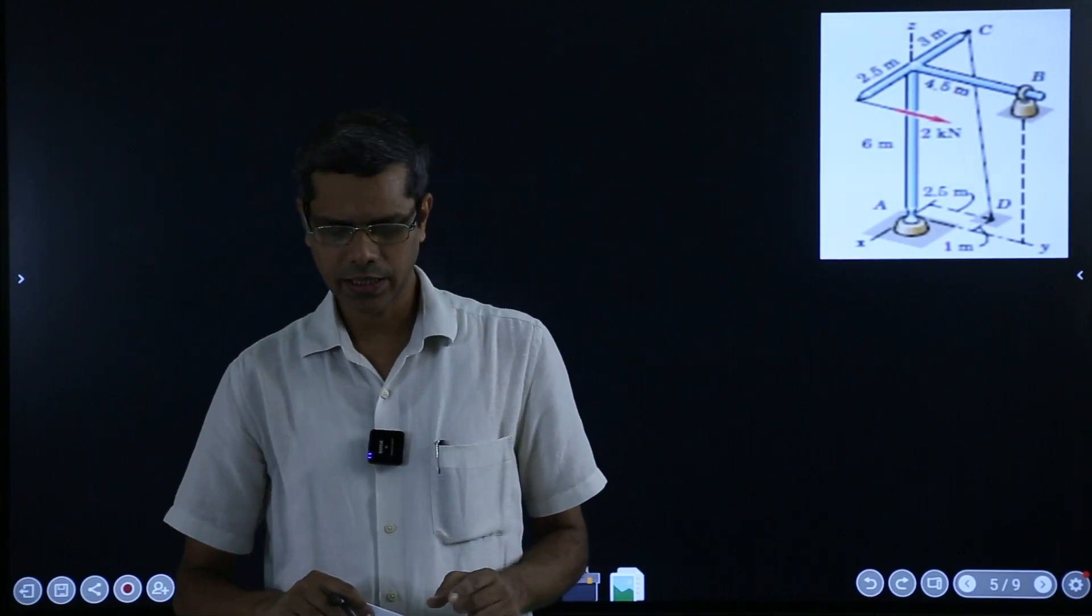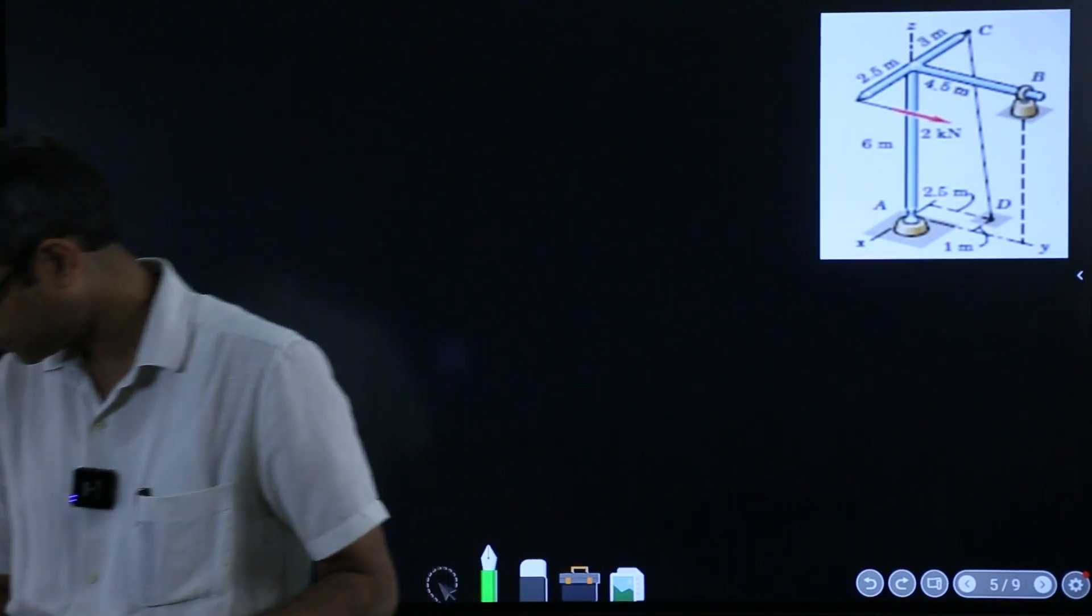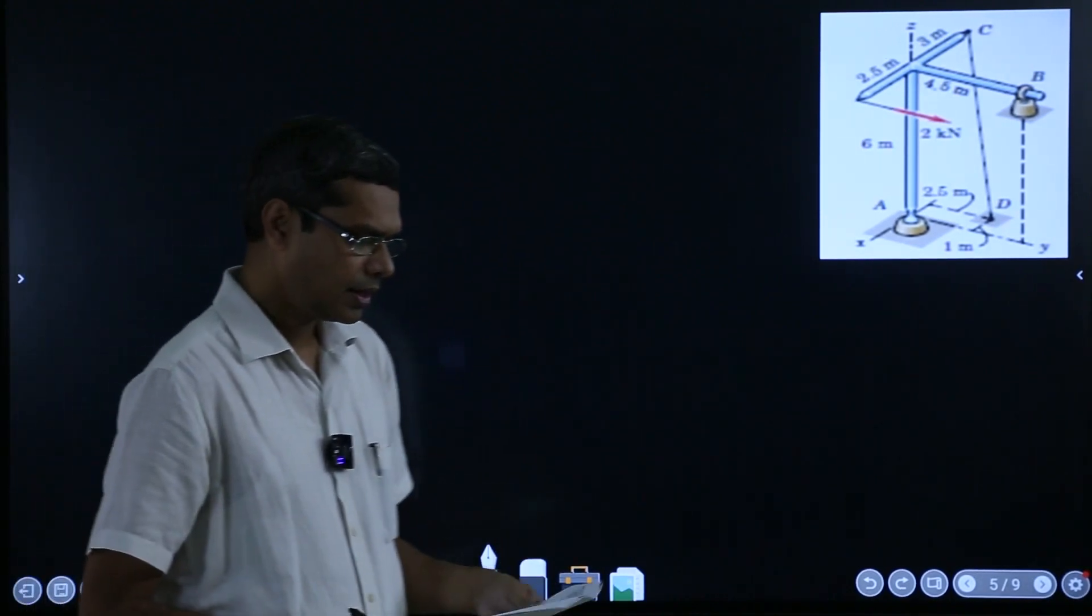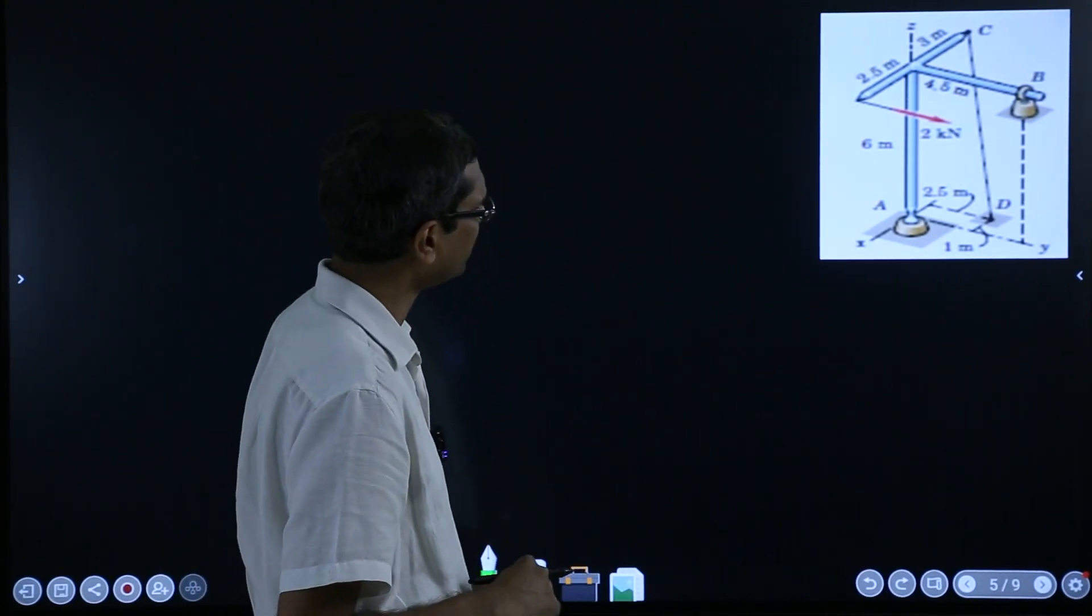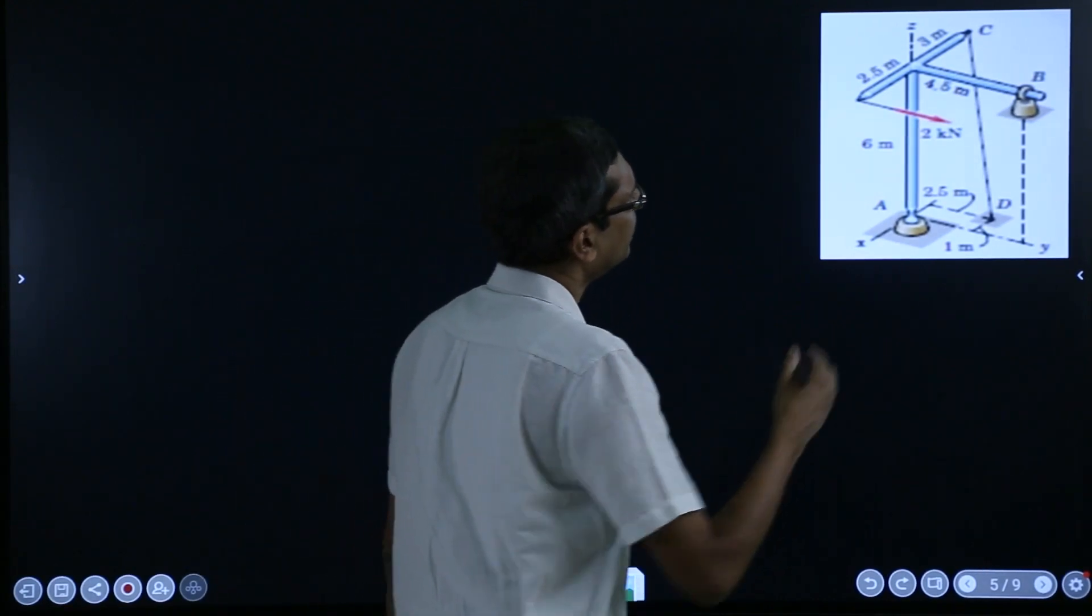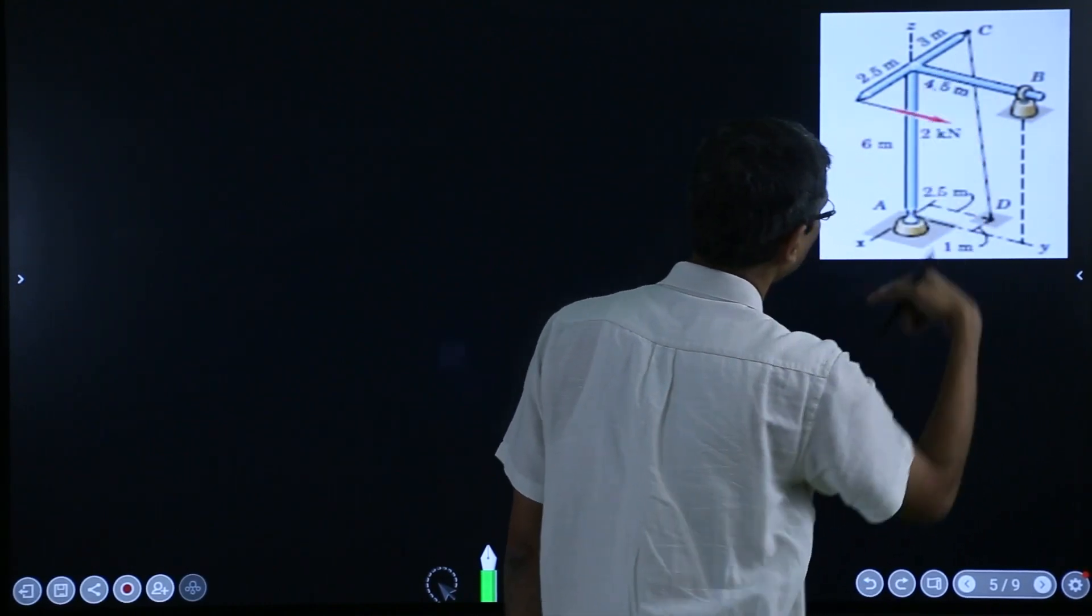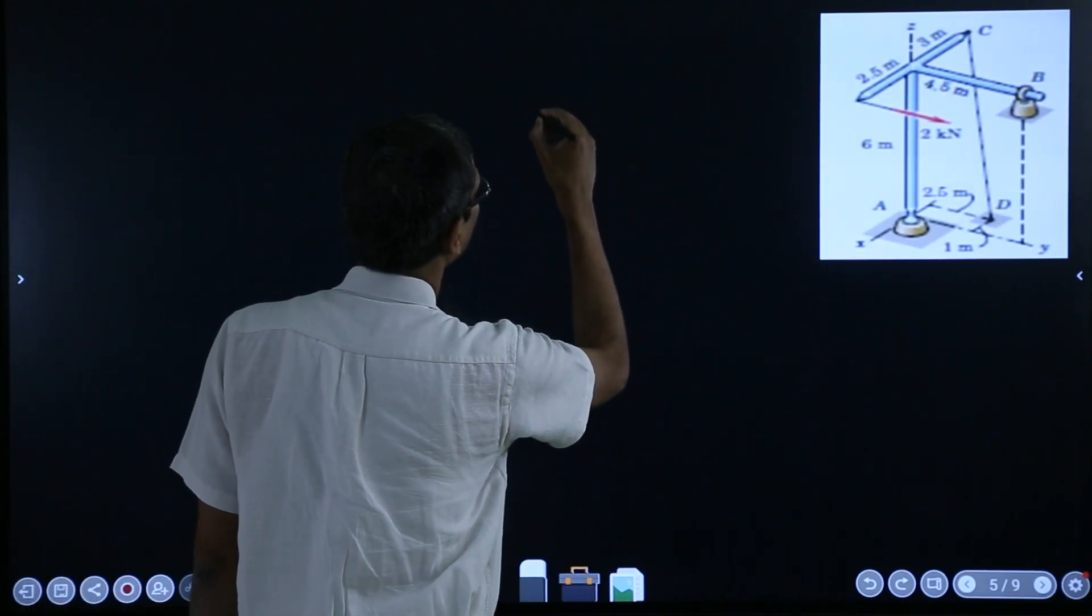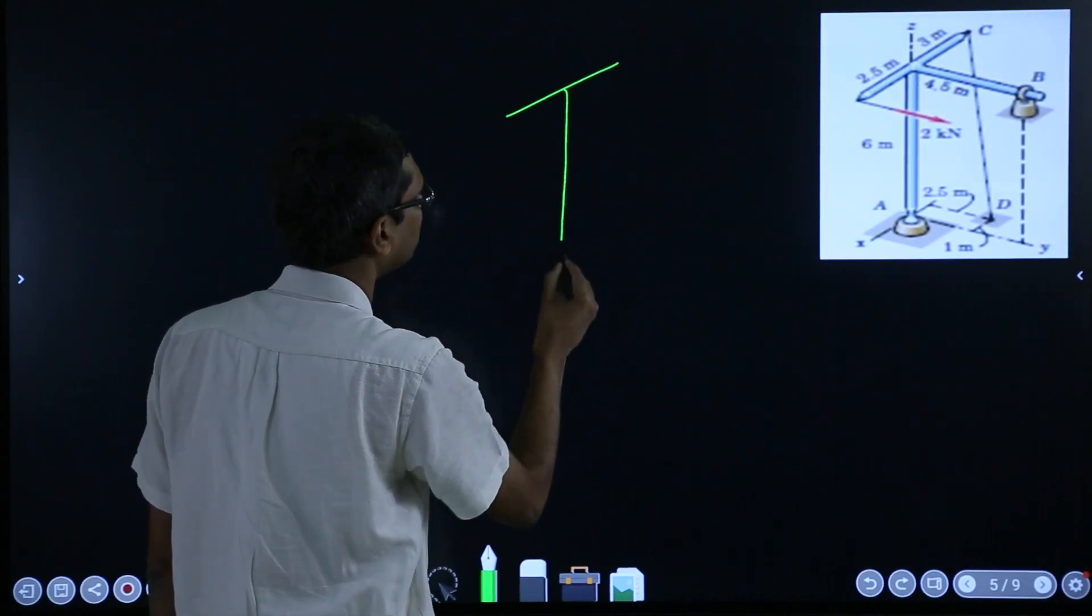This is example 3 of multiple connected bodies in English. This is another interesting problem where we have a body which is connected by a frame. So this is basically a frame which is, there is a T sort of thing. Let me draw it here, so there is a T like that.